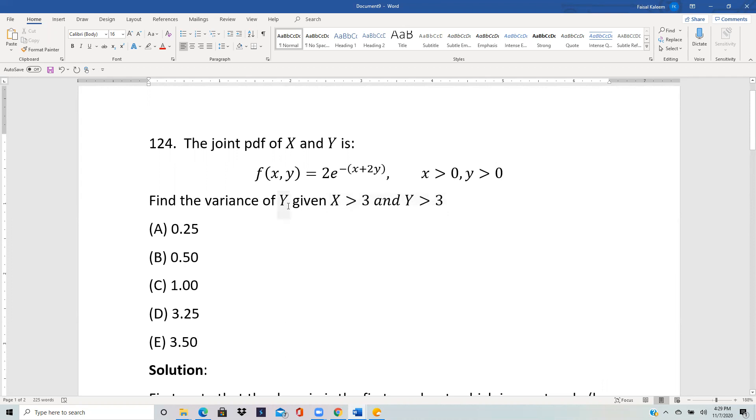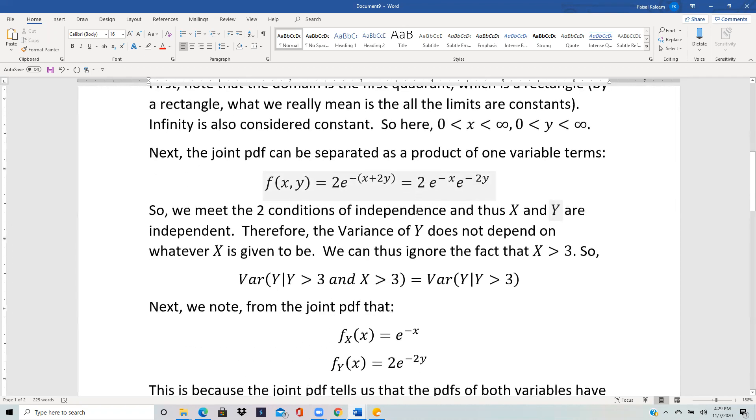Variance of y given x greater than 3 and y greater than 3 is simply equal to - so they had x here so let's just write in that order they first had x and then they had y - and what we said is it does not depend at all on what x is because x and y are independent so variance of y does not depend on x. So therefore this is the same as variance of y given y greater than 3.